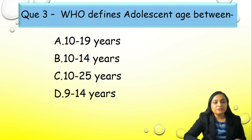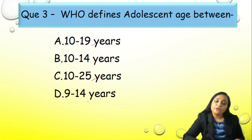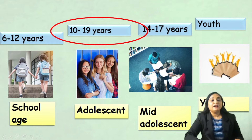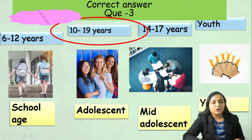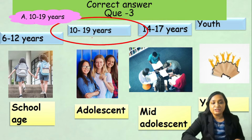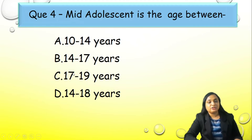Question number 3: WHO defines Adolescent age between — A) 10 to 19 years, B) 10 to 14 years, C) 10 to 25 years, or D) 9 to 14 years. Correct answer is option A, 10 to 19 years. Just remember this slide — have a photographic mind: 10 to 19 years stands for Adolescent age.